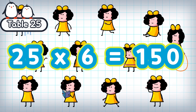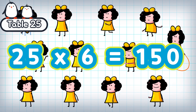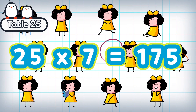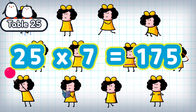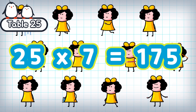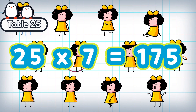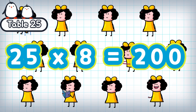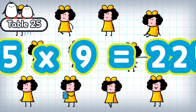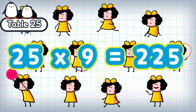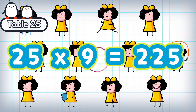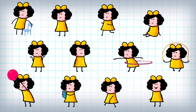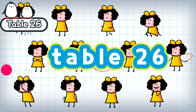25 times 6 is 150. 25 times 7 is 175. 25 times 8 is 200. 25 times 9 is 225. Table 26.